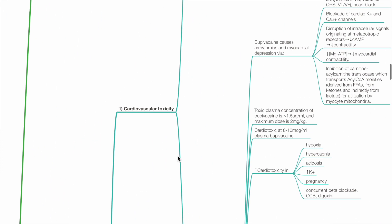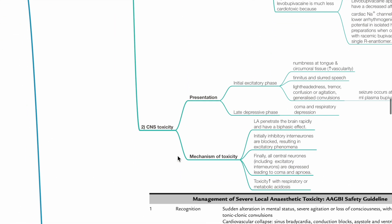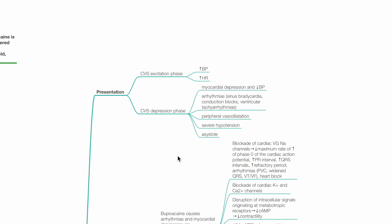CVS toxicity and CNS toxicity may occur. The CVS excitation phase presents with hypertension and tachycardia, followed by a CVS depression phase with myocardial depression, hypotension, arrhythmias, vasodilation, and asystole.